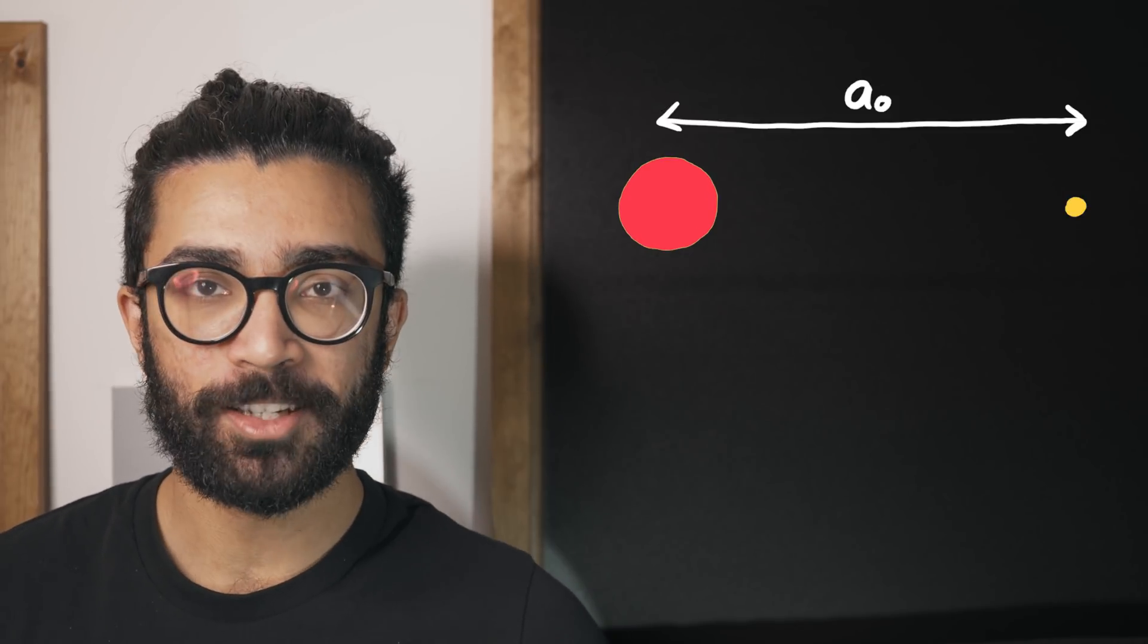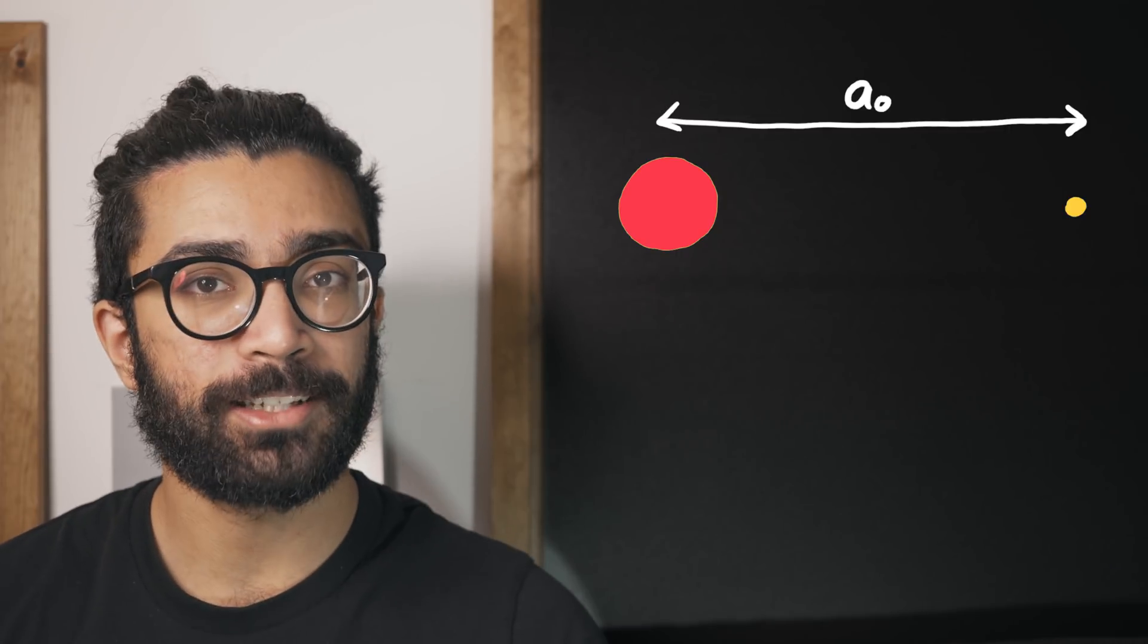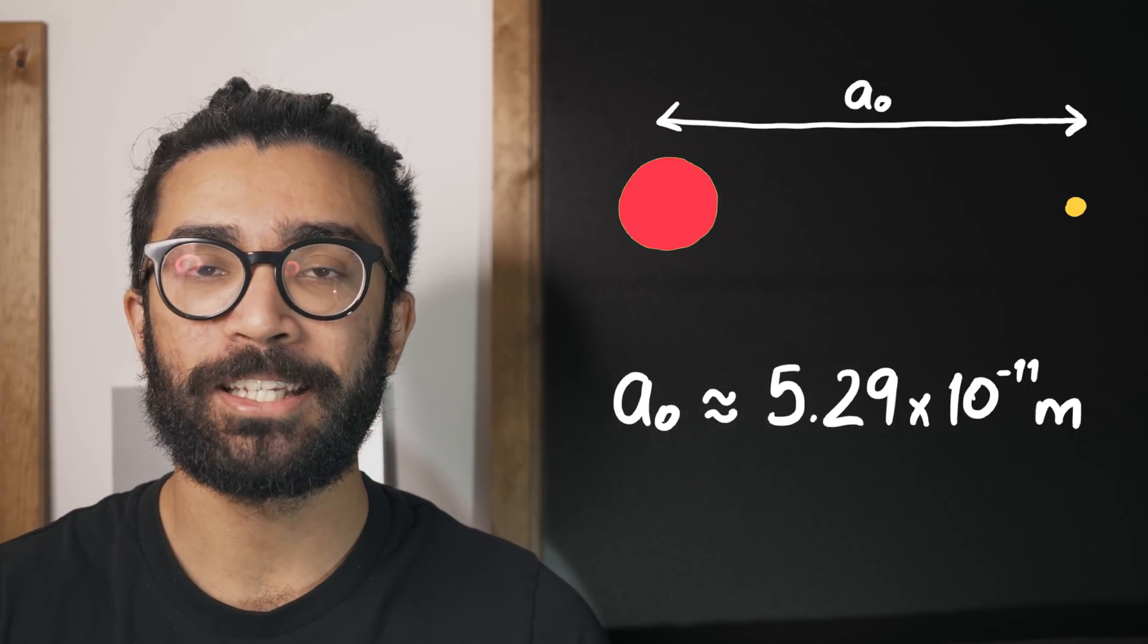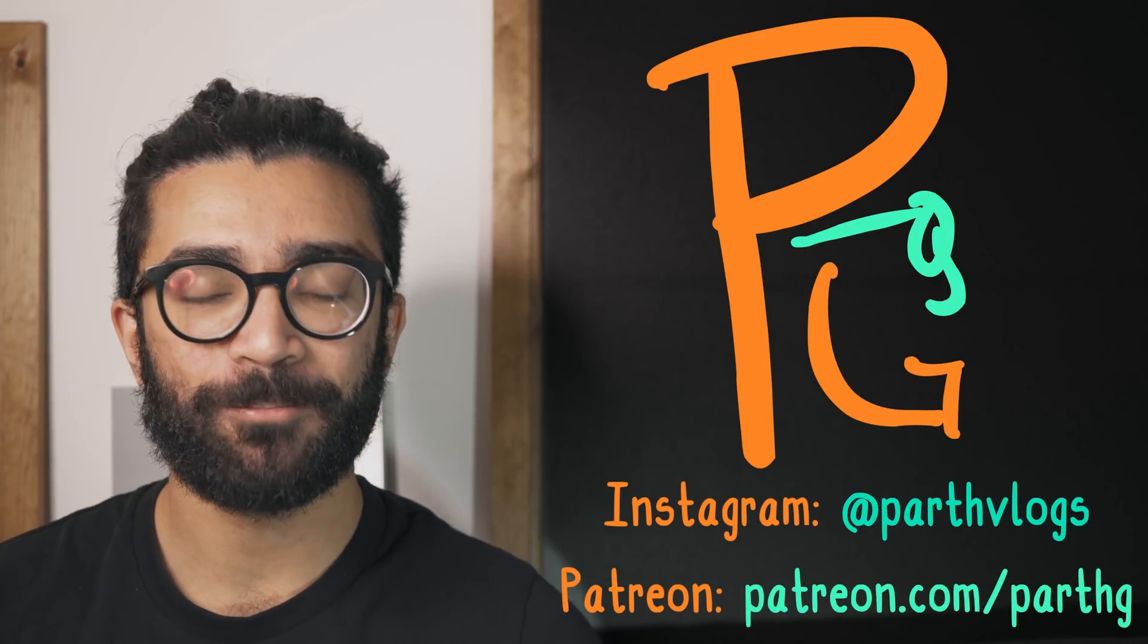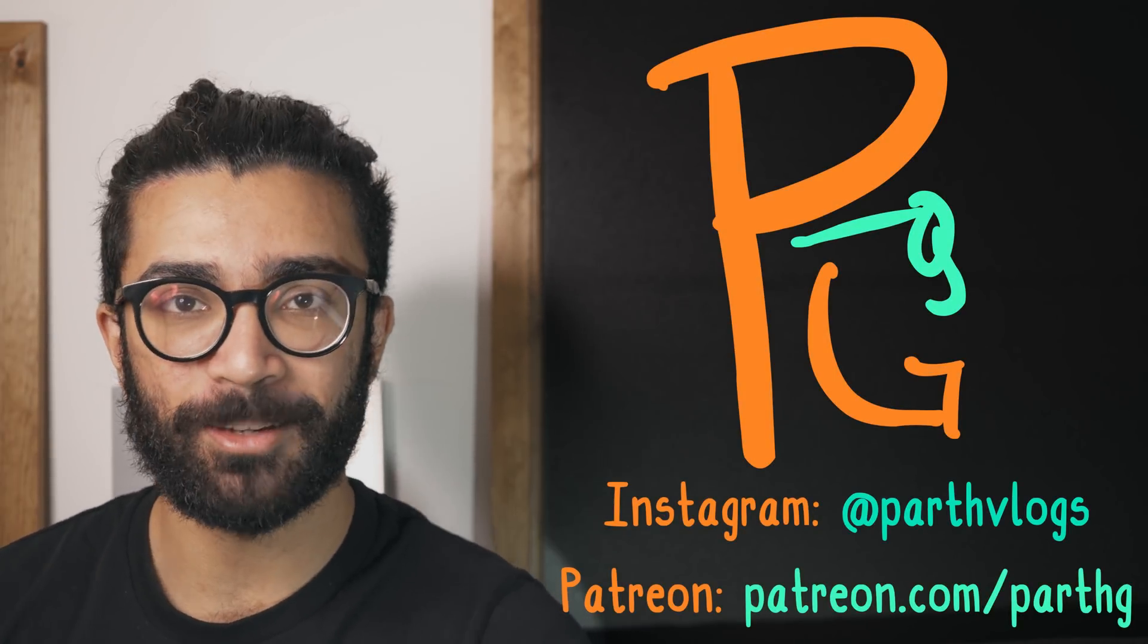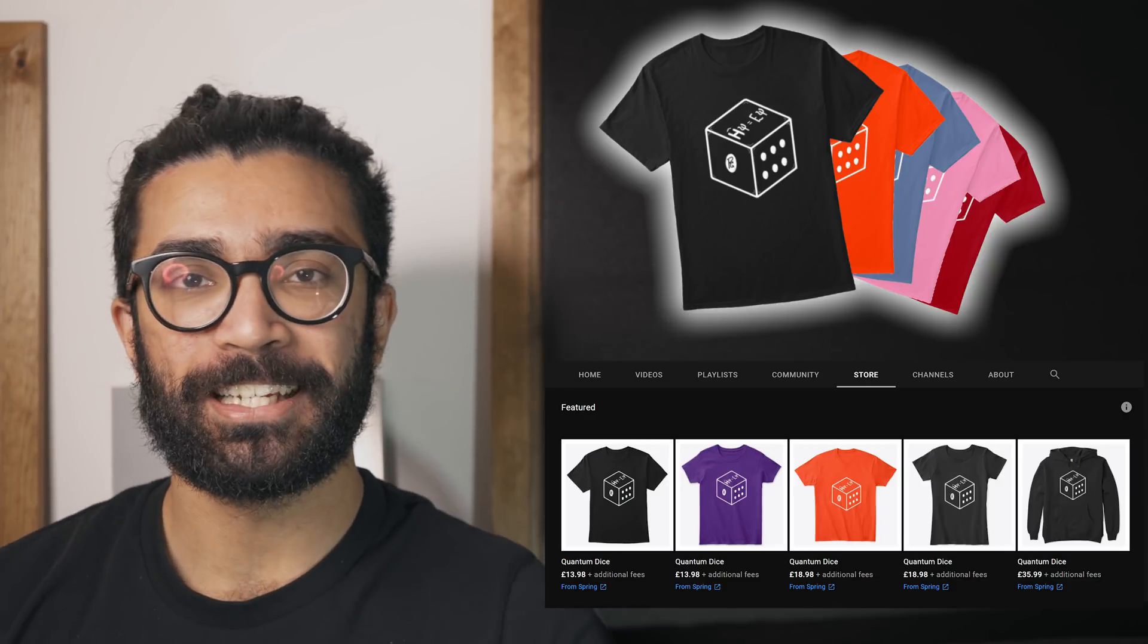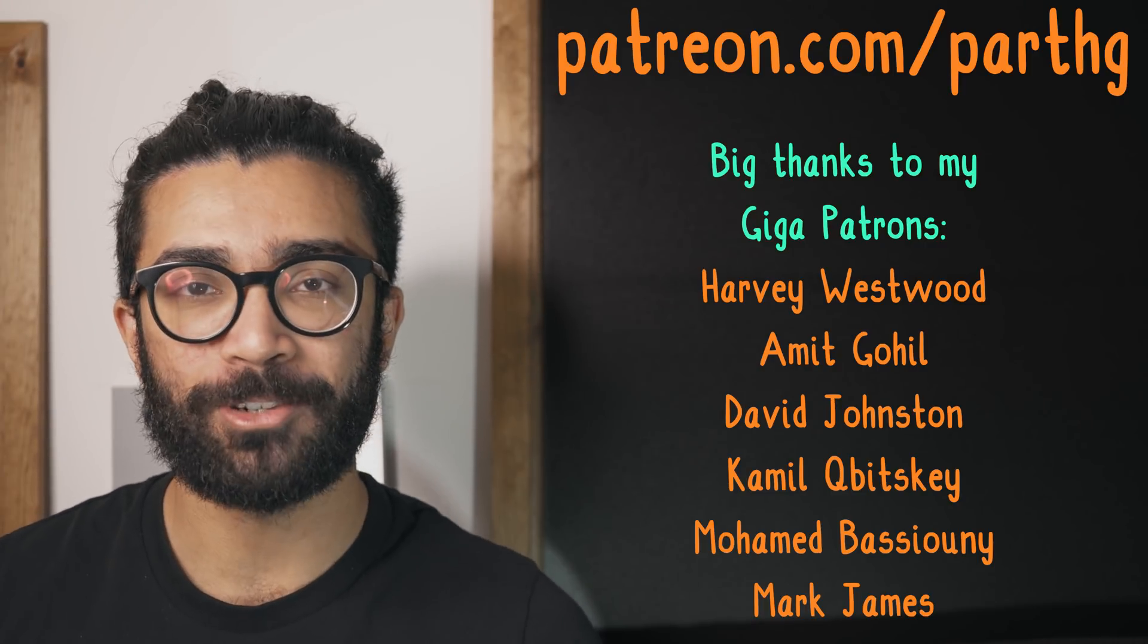And so what we've seen is that the Bohr radius, the average distance between a proton and an electron in a hydrogen atom in the lowest energy level, is about this much. And so in other words, we've seen that this is the size of an atom. And with all of that being said, I'm going to finish up here. Thank you so much for watching. If you enjoyed this video please do hit the thumbs up button and subscribe for more fun physics content. As always, links to my merch can be found down below in the description box or on the store tab of my channel page. And my Patreon is linked down below as well if you'd like to support me on there. Huge thanks to my Giga Patrons as well as all of my other Patrons, and thank you so much for watching. I will see you very soon.